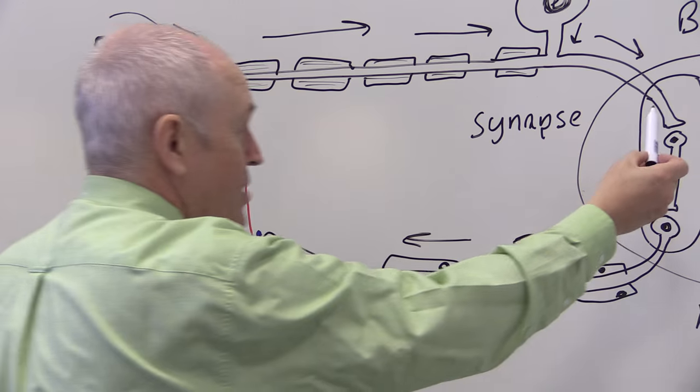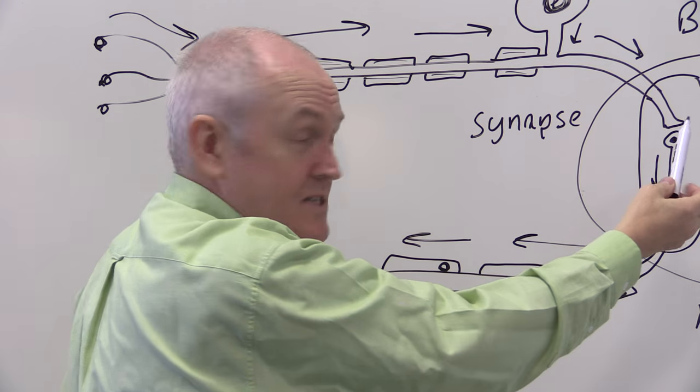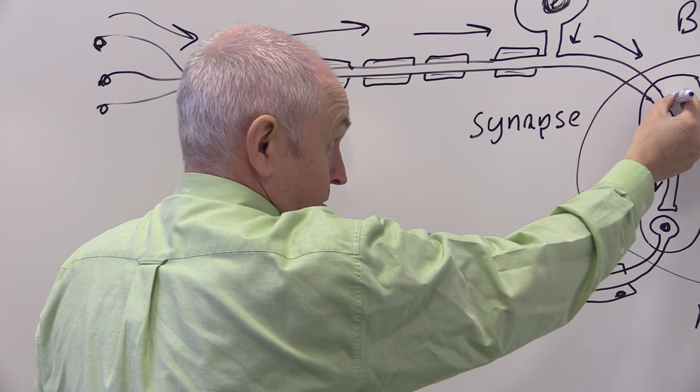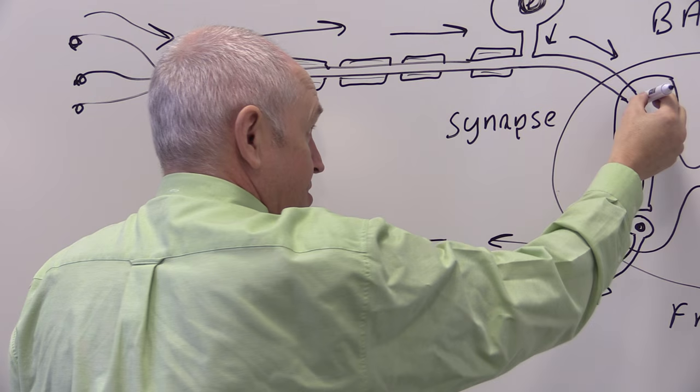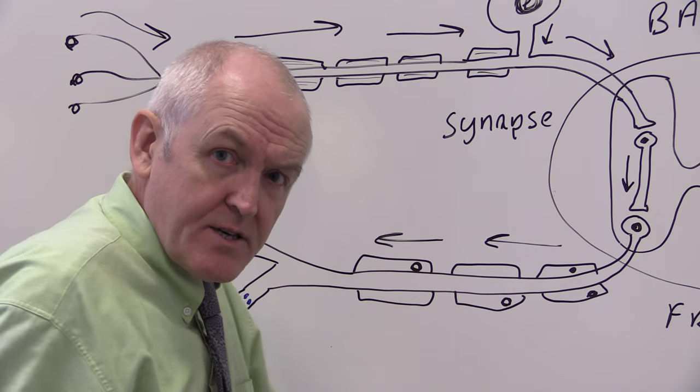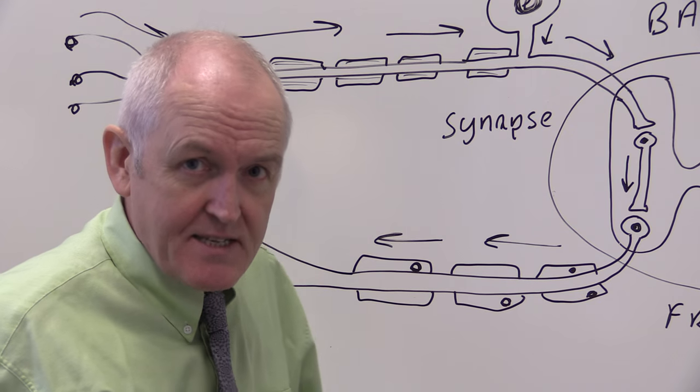Now at the same time, there's other components from the sensory neuron that synapse with ascending neurons which take the information up to the brain. So the brain does become aware of what's going on, but slightly later.